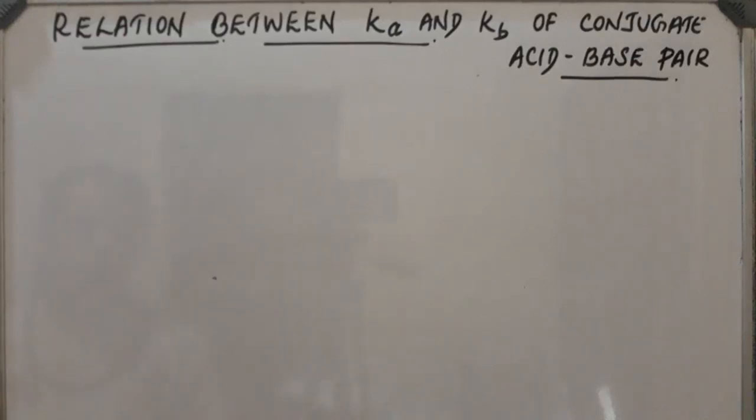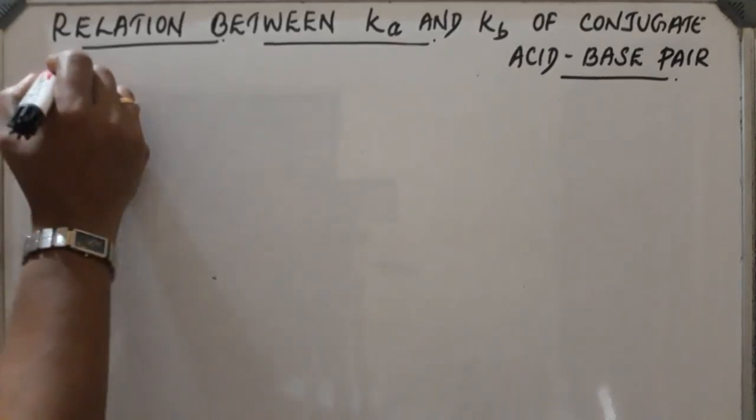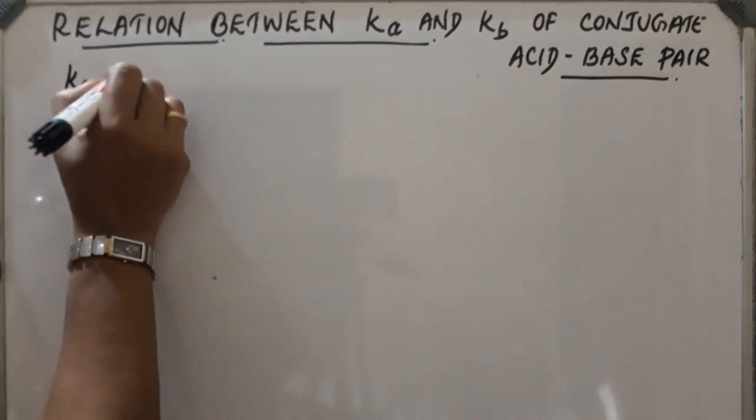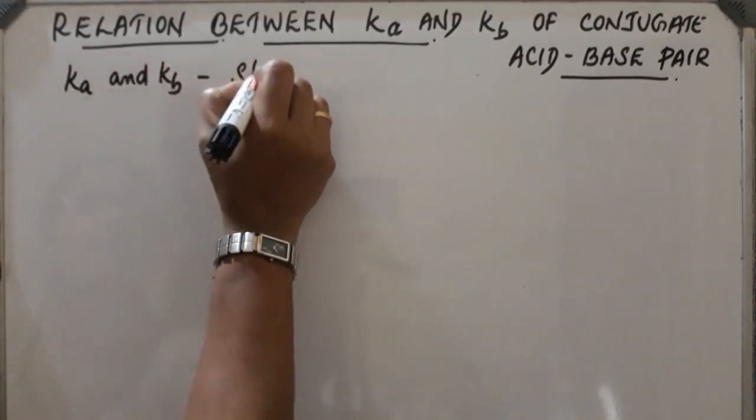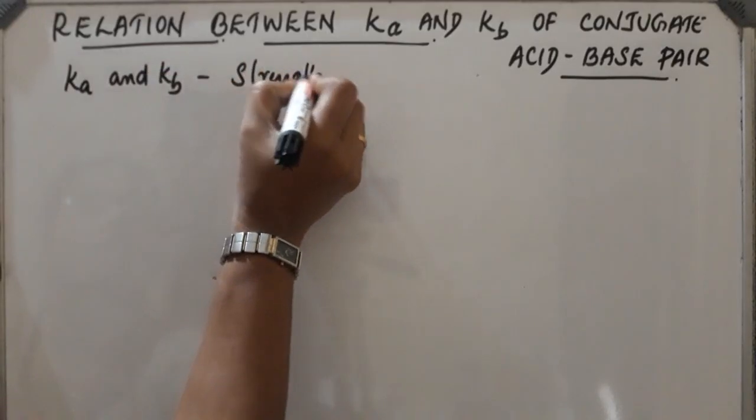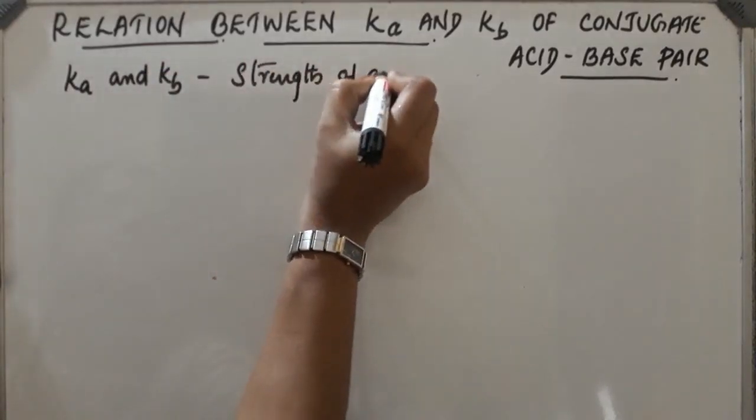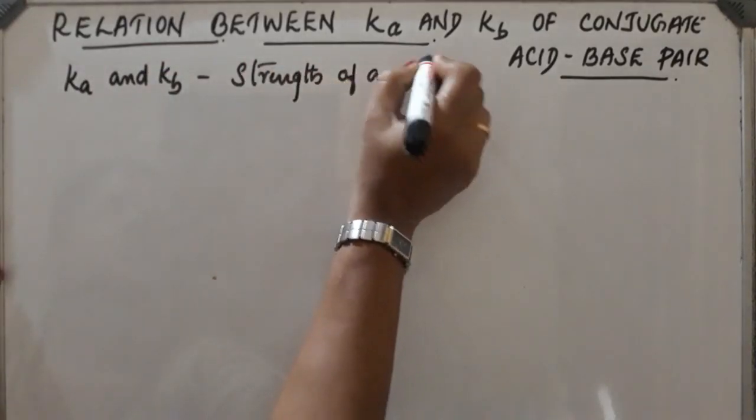Good morning. Today's topic is relation between Ka and Kb of conjugate acid-base pair. Ka and Kb are the equilibrium constants of an acid and a base. Ka and Kb represent the strength of an acid and a base.